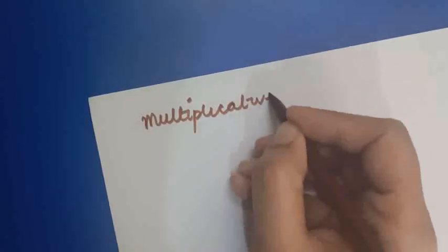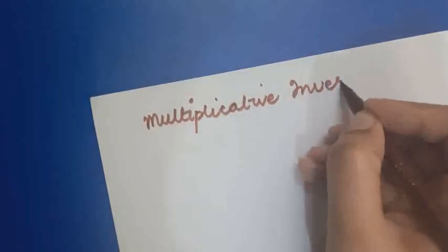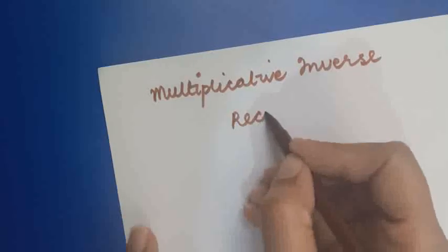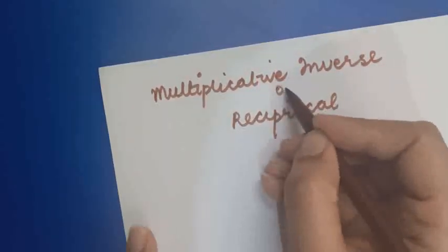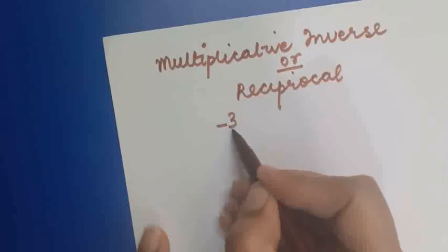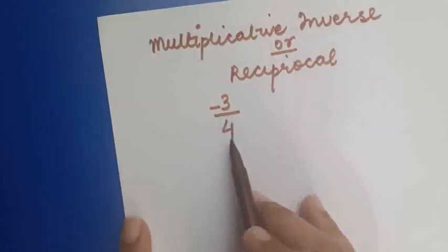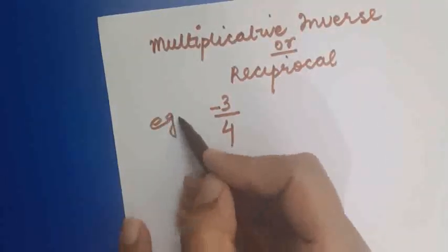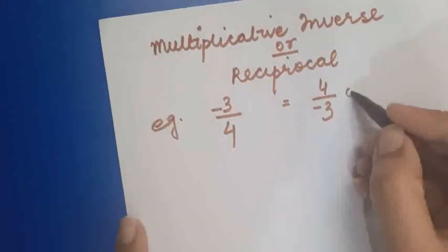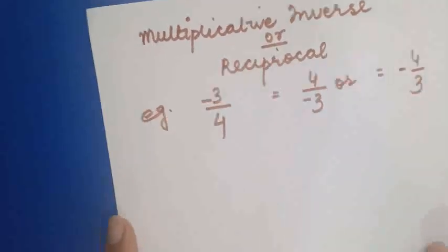Now let's start with the next topic: multiplicative inverse. The multiplicative inverse of a rational number is simply its reciprocal — multiplicative inverse and reciprocal are one and the same thing. For example, the multiplicative inverse of minus 3 upon 4 will be 4 upon minus 3, or equivalently minus 4 upon 3.